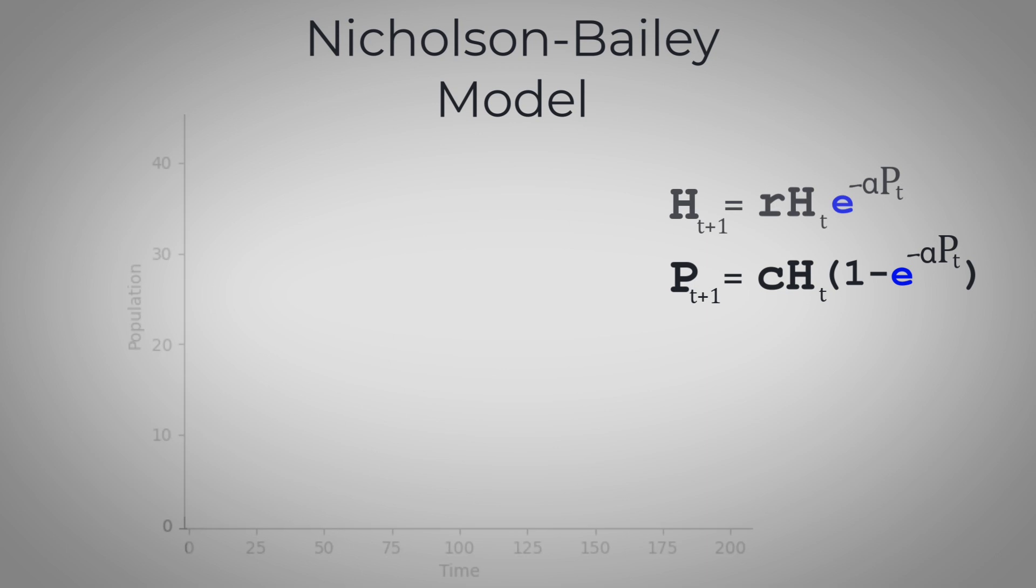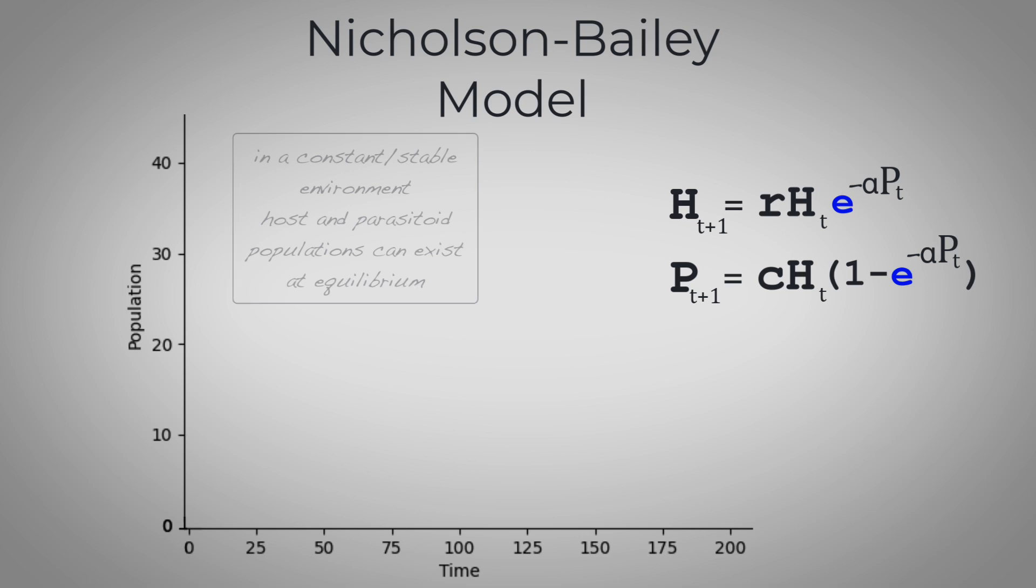When we graph these together over time, well, first, here's something you should know. The Nicholson-Bailey model predicts that in a constant environment, host and parasitoid populations can theoretically exist at equilibrium. But this isn't very stable.